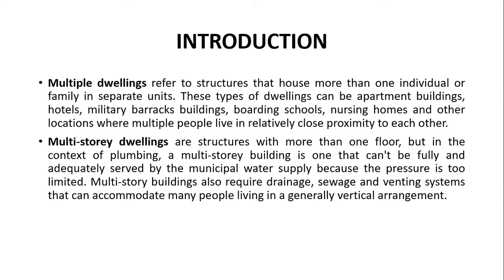An example of multiple dwelling: if you have two portions in your house and in one portion you are living as one family, and the other portion you have rented out, so there are actually two families living in that house. Whereas multi-story dwellings are structures which have more than one floor, but in the context of plumbing, a multi-story building is one that cannot be fully and adequately served by the municipal water supply because the pressure for that building is too limited.